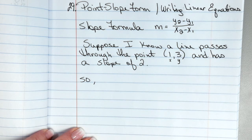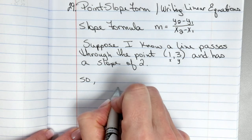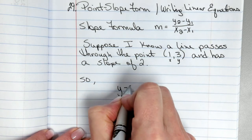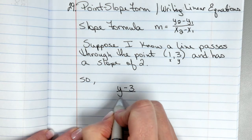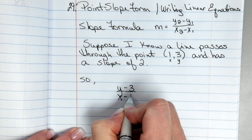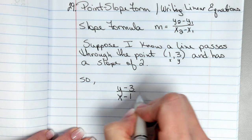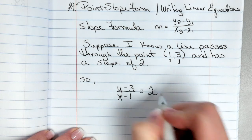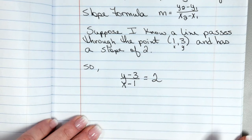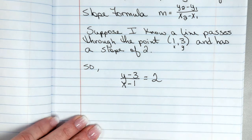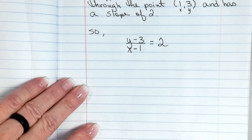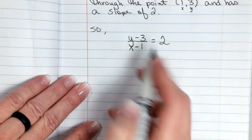So if I use that slope formula, I have enough to fill in: y minus 3 and x minus 1, and we know that it equals 2. That's what we know. We've got one ordered pair, we've got the slope. We rearrange it a little bit.